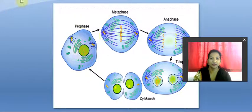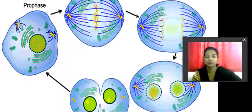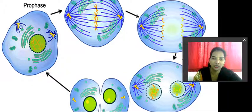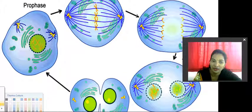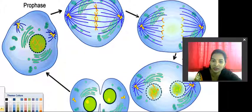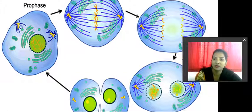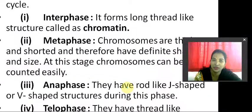Hello students, welcome back. In the previous classes we discussed the different types of chromosomes and based on the position of the centromere, how these chromosomes have been separated — acrocentric, metacentric, submetacentric, telocentric, and other types. Now we will talk about the different natures of chromosomes: their shapes and sizes.